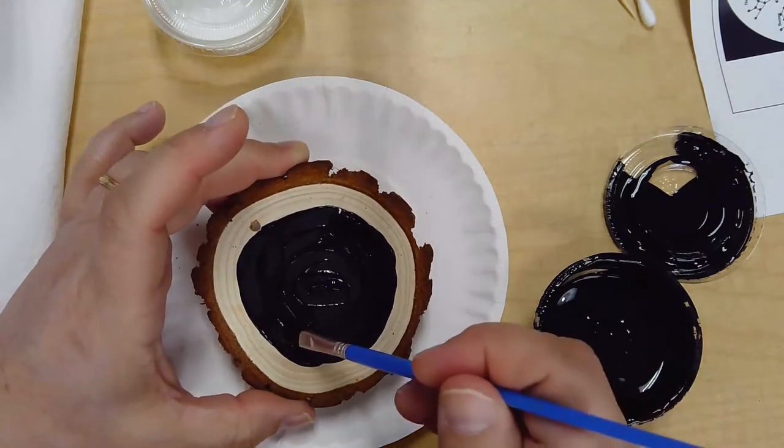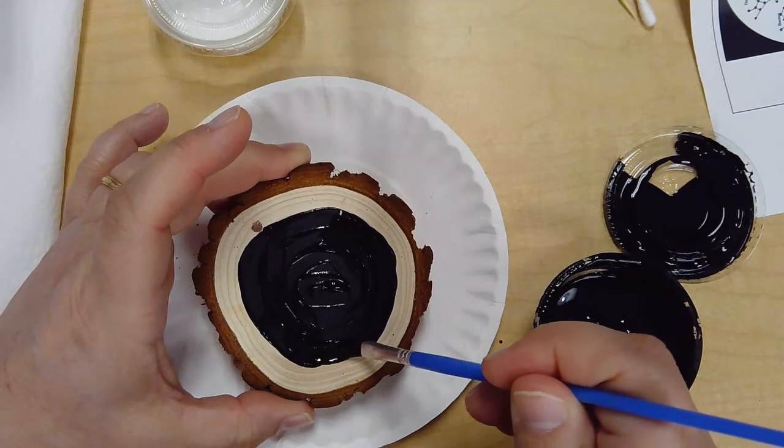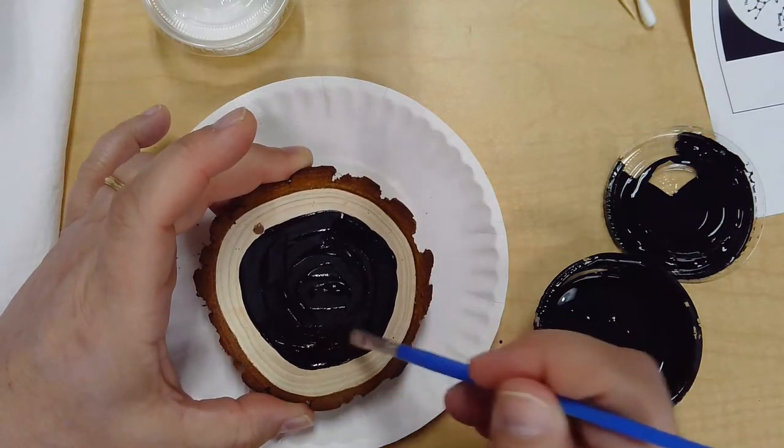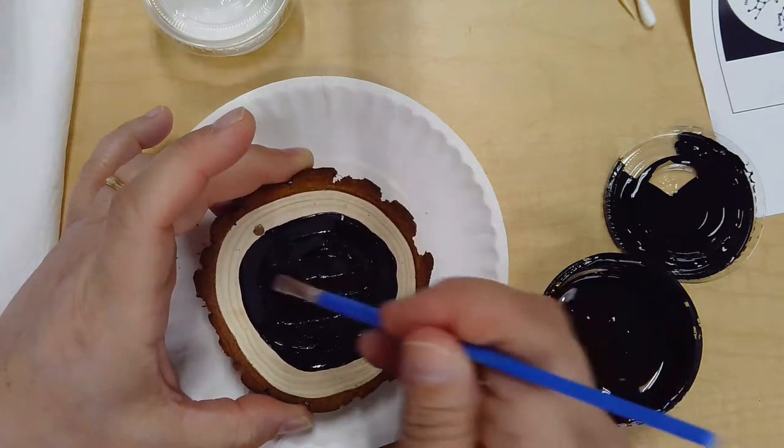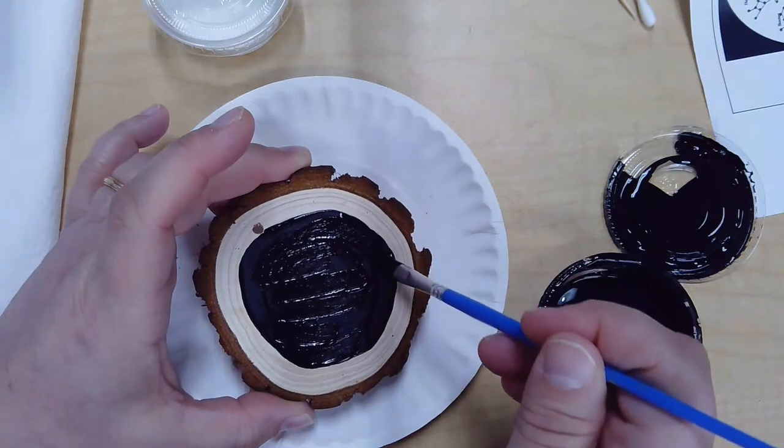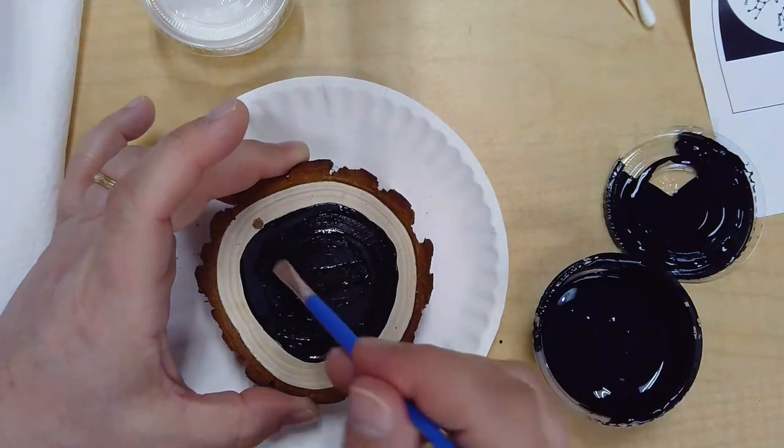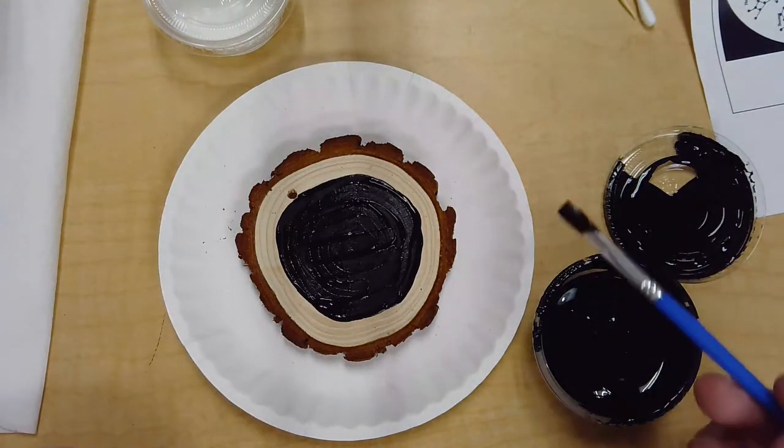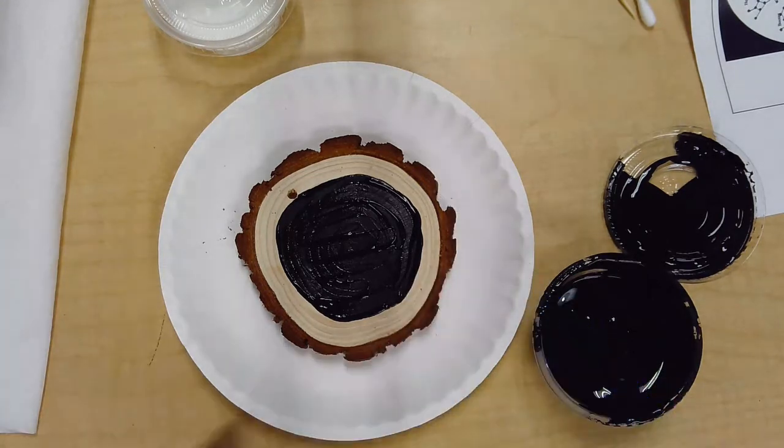Once it looks good, you need to let it dry completely before you add your white paint. And make sure you clean your brush. And I would let one side dry completely before you paint the other side. Make sure you clean your brush real well.